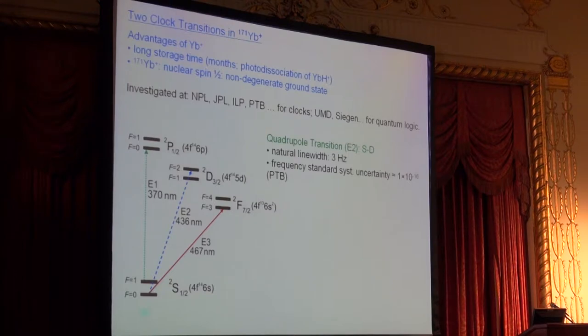Let me first introduce ytterbium a little bit. Ytterbium plus has a number of practical advantages that make it suitable for many applications. For example, it can be stored in a trap for very long times—months. This is mainly because the storage time is usually limited by chemical reactions and formation of molecular ions. In the case of ytterbium plus, the same laser that is used for cooling the ion is able to photodissociate the dominant reaction product, ytterbium hydride. The isotope ytterbium-171 has a nuclear spin of one-half, which couples with the electron spin to a non-degenerate F=0 ground state that is very easy to prepare by hyperfine pumping.